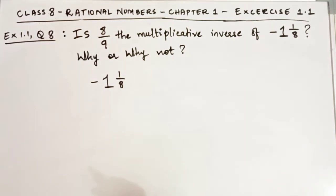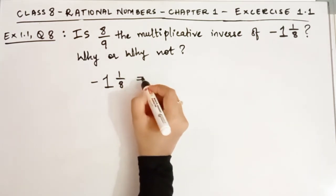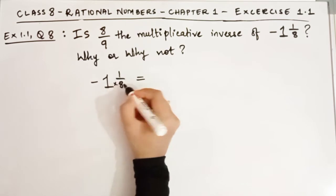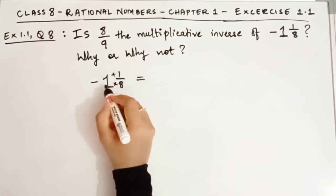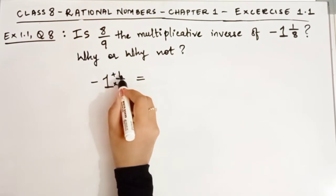How do you solve the mixed fraction? We multiply them and then add them. 8 times 1 is 8, and plus 1 is 9.